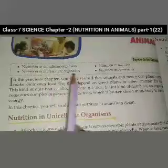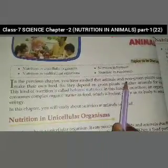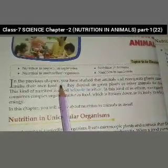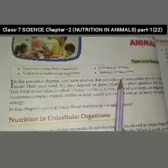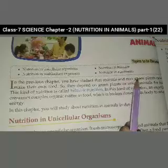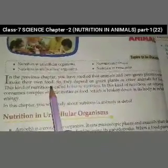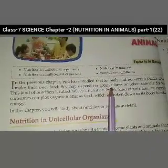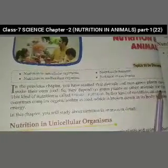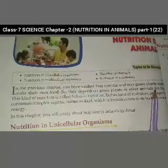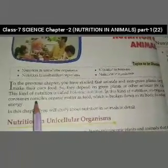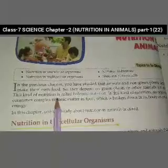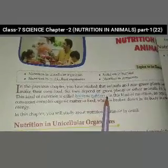In the previous chapter, you studied that animals and non-green plants cannot make their own food. So they depend on green plants and other animals for food. This kind of nutrition is called holozoic nutrition.